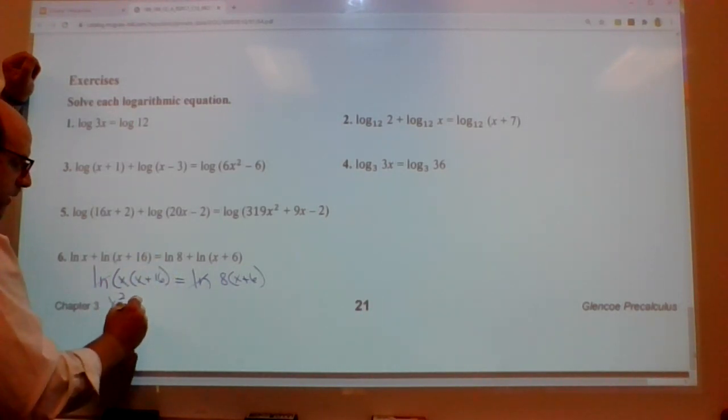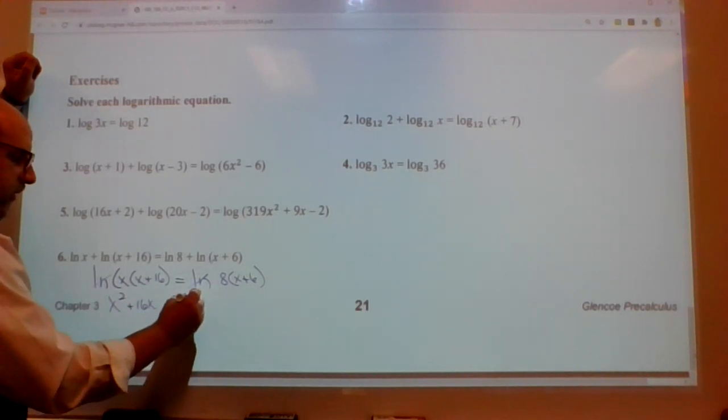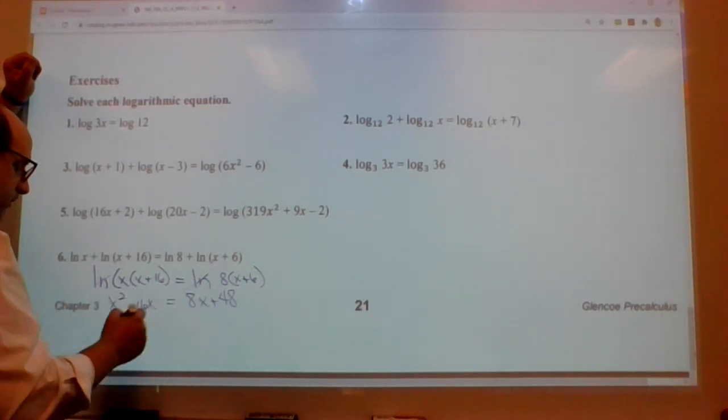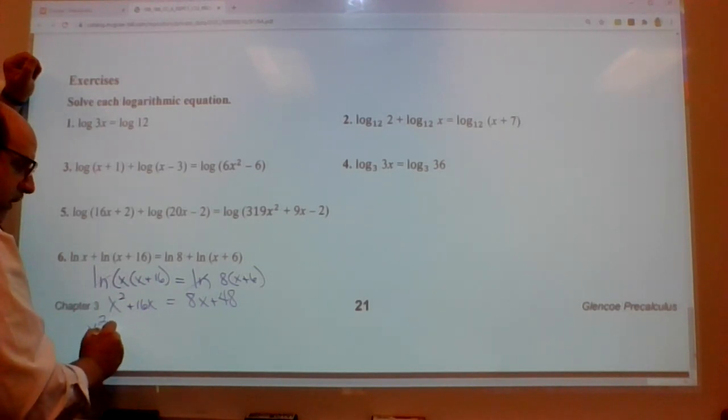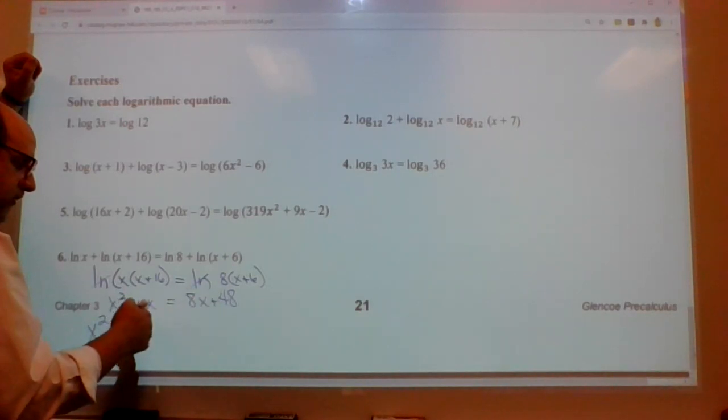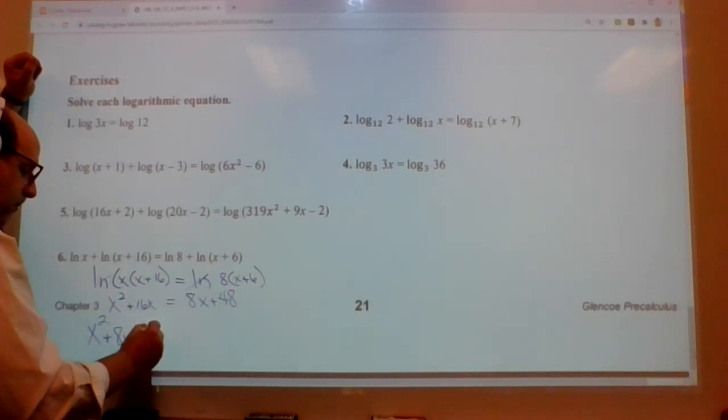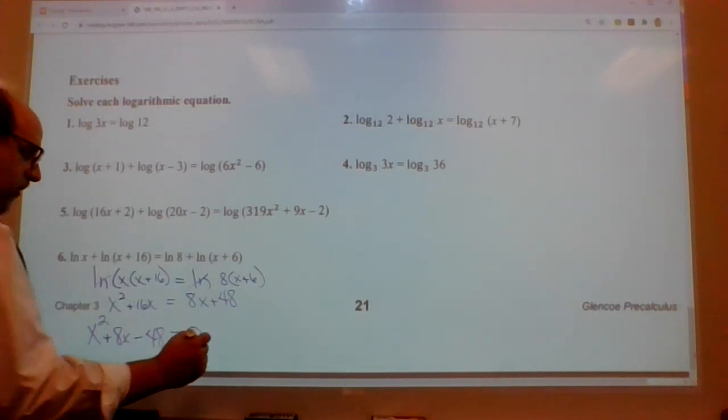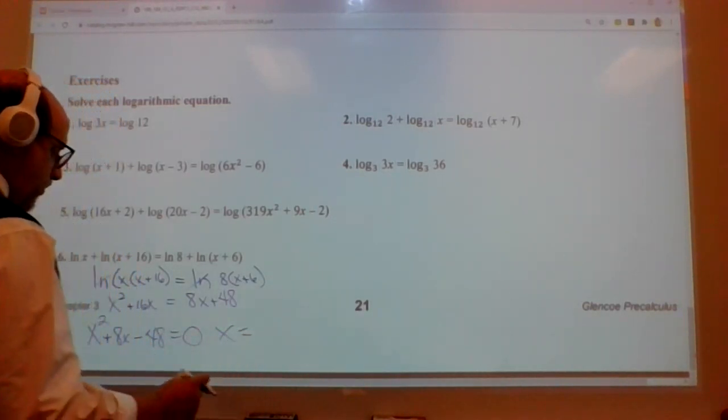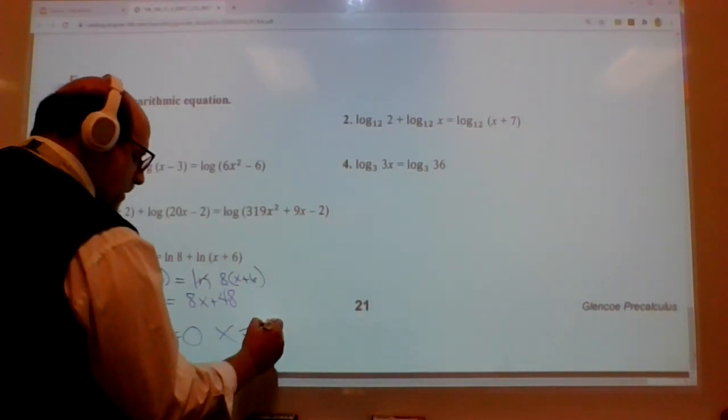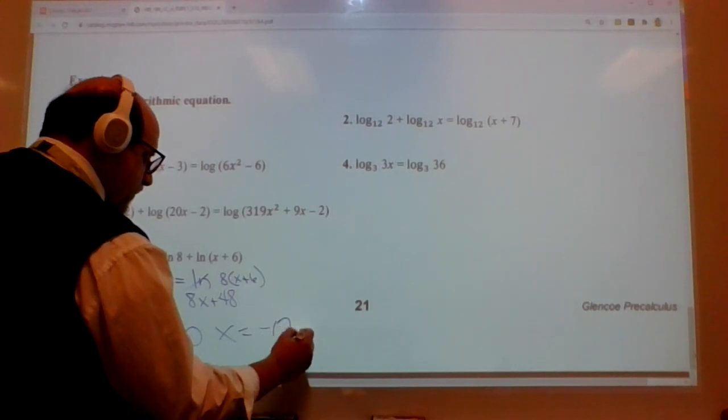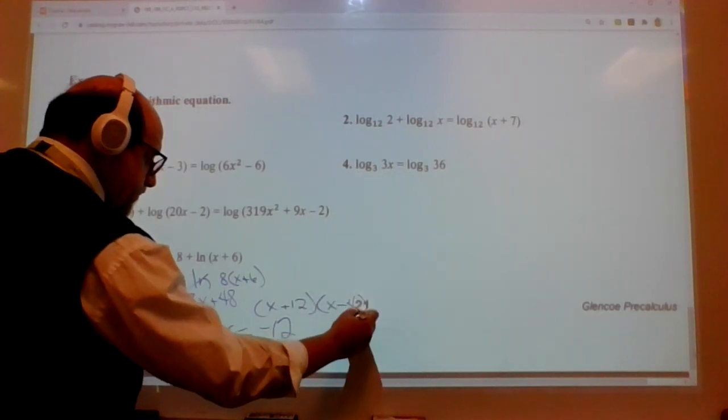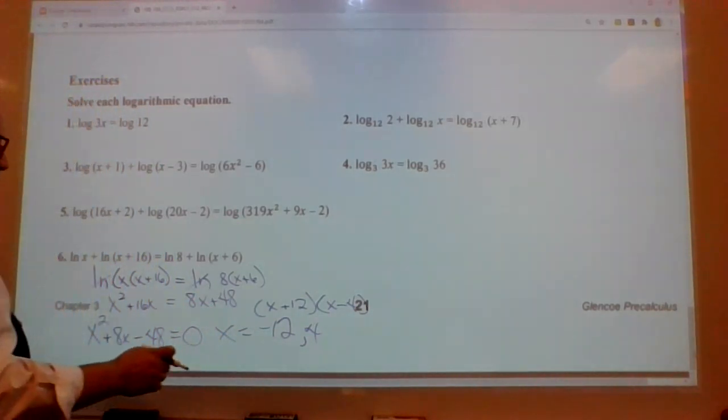So let's do this distribution. x squared plus 16x equals 8x plus 48. All right. Let's do some work. x squared plus 8x. That's when I move the 8x over here. And then I subtract 48. Minus 48. 48, let's say it's got to be 12 and 4. So x equals, let's say it's got to be negative 12 because it's x plus 12 and then x minus 4.